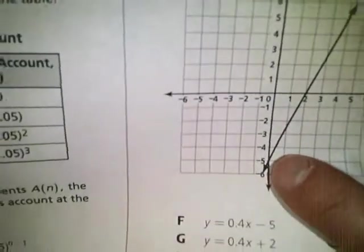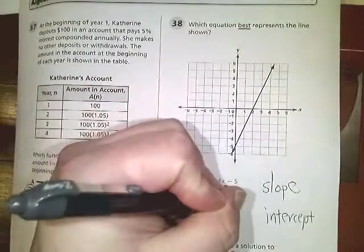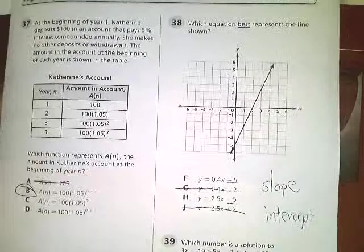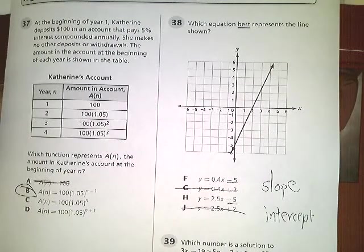The intercept is the y-intercept. It's where it hits the y-axis. You can see that it hits the y-axis at negative 5. So anything that doesn't end, this ends in negative 5 and this does too, anything that doesn't, just eliminate. G and J are already gone before you even have to do any more work.